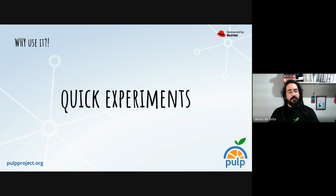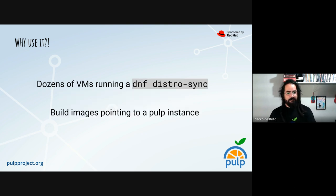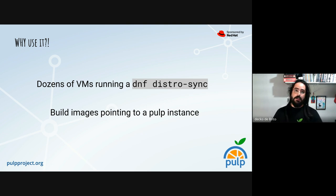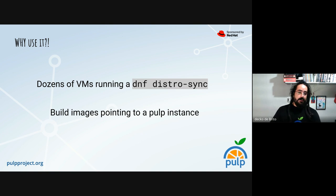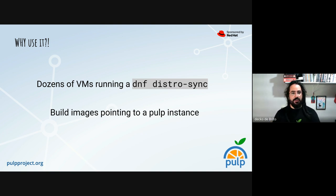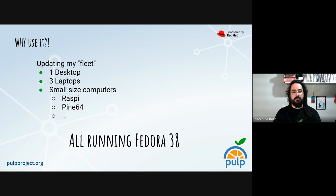Also, you could do some quick experiments — you could have like dozens of VMs running a distro sync pulling content from Pulp, and you could also build some images pointing to that Pulp instance instead of downloading content directly from upstream repositories.